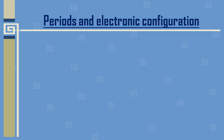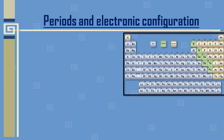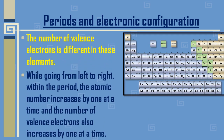Next we have periods and electronic configuration. Periods are the seven horizontal rows in the modern periodic table — we have periods one to seven, so seven periods in total. This is the structure of the modern periodic table, which has seven periods and 18 vertical columns known as groups.